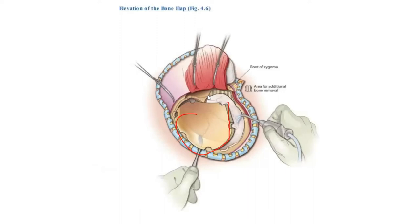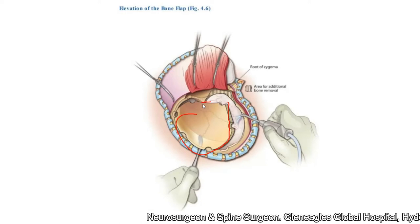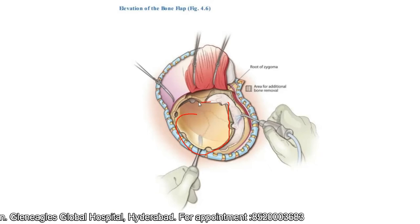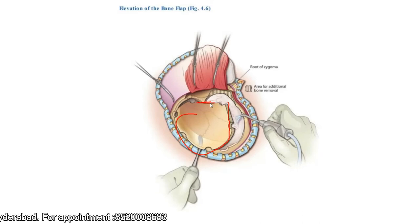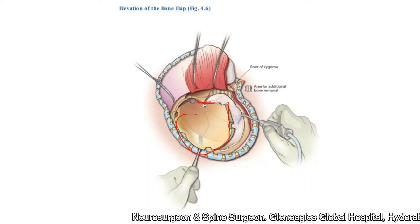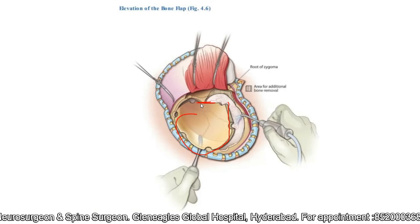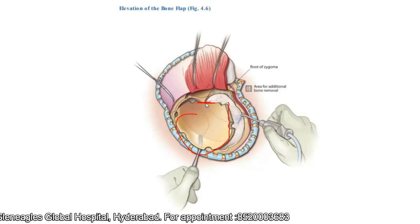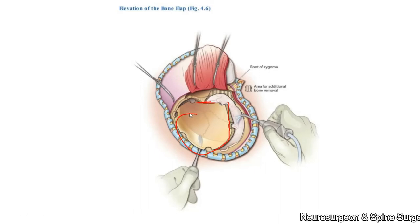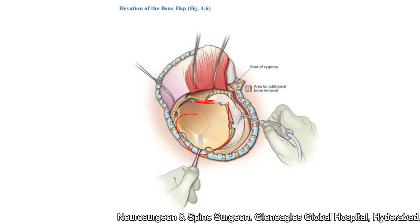One important precaution: this is the sphenoid ridge, so you will have to drill the bone to make it papery thin. When you are elevating the bone, this bone should easily fracture at the sphenoid ridge. If it is not getting easily fractured, take additional time to drill it, because if you try to elevate it while it is still thick, the fracture can extend into the base of the skull across foramina like the foramen spinosum, causing injury to the meningeal arteries and torrential bleeding which is difficult to control. So remember to drill the sphenoid ridge as papery thin as possible.